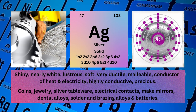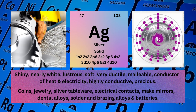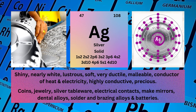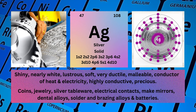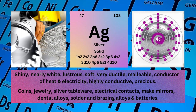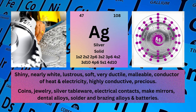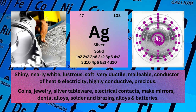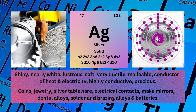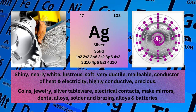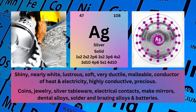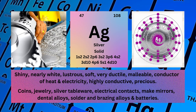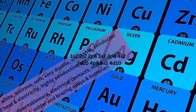Physical properties: shiny, nearly white, lustrous, soft, very ductile, malleable, conductor of heat and electricity, highly conductive, precious. Silver is used for coins, jewelry, silver tableware, electrical contacts, making mirrors, dental alloys, solder and brazing alloys, and batteries.